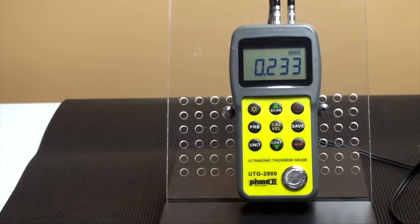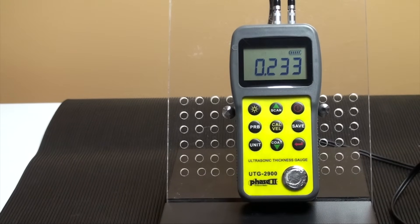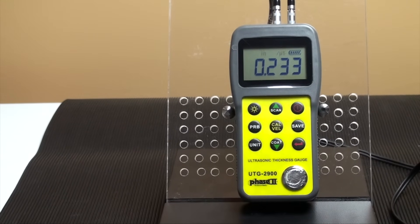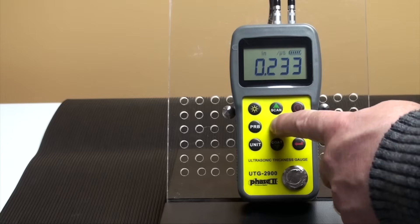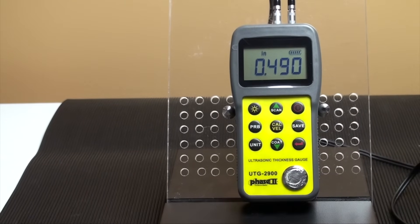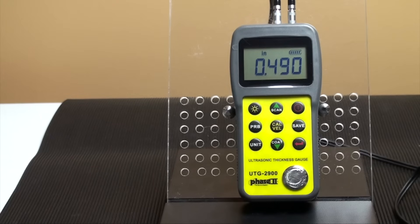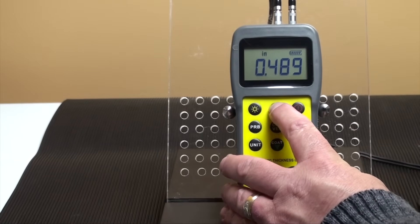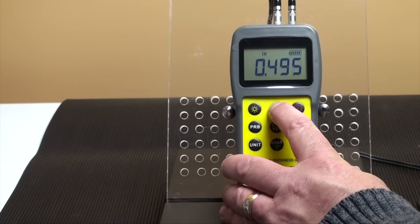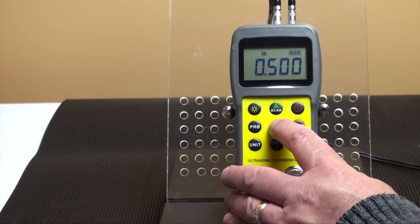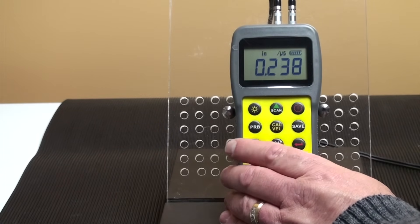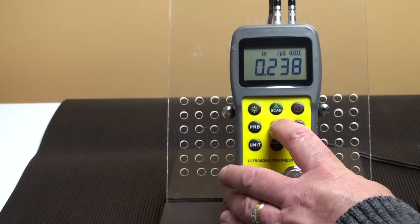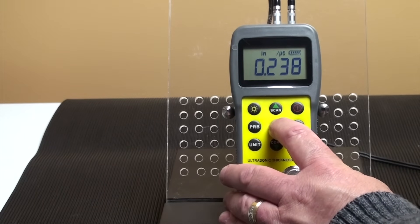There are velocity calibration methods to pinpoint velocity of material with a known thickness. Place the probe on a part with a known thickness, then remove the probe. Press the velocity key once. Adjust the value to match a known thickness of material. Press the velocity key again and it will display the sound velocity for that material. Push the velocity button to save.